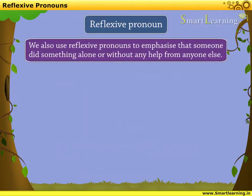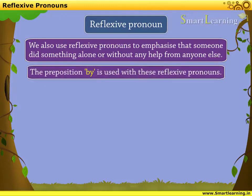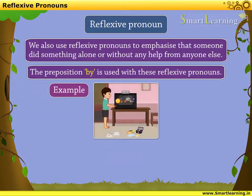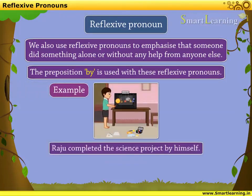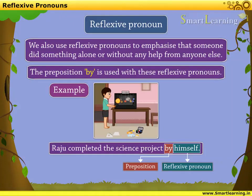We also use reflexive pronouns to emphasize that someone did something alone or without any help from anyone else. The preposition 'by' is used with these reflexive pronouns. For example: Raju completed the science project by himself. Here, the reflexive pronoun 'himself' is used with the preposition 'by' to emphasize that the subject Raju completed his project alone and without help from anyone else.